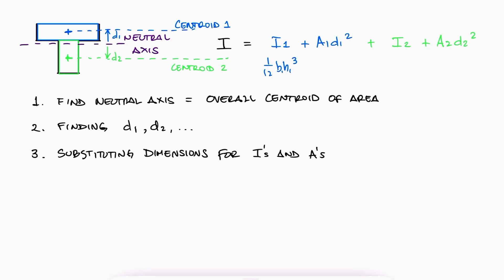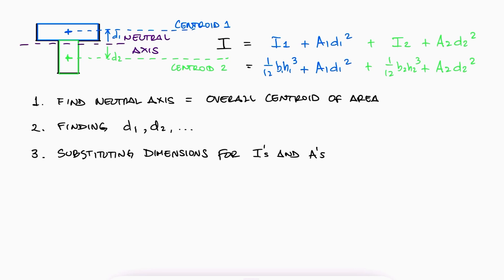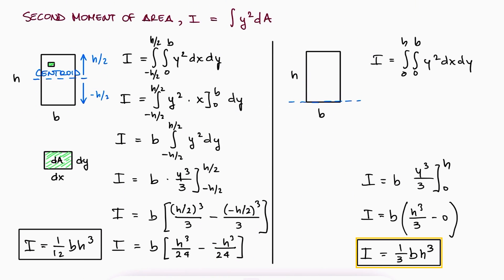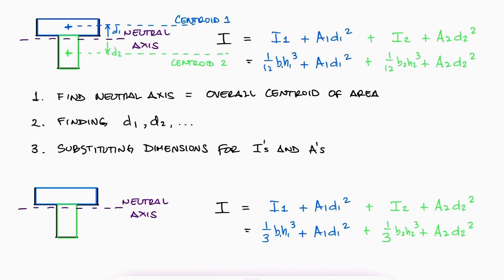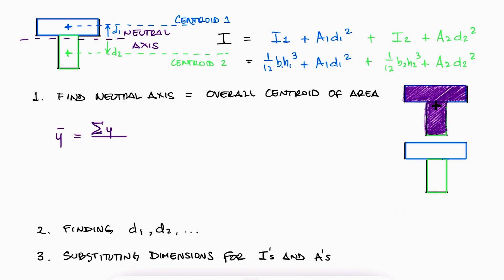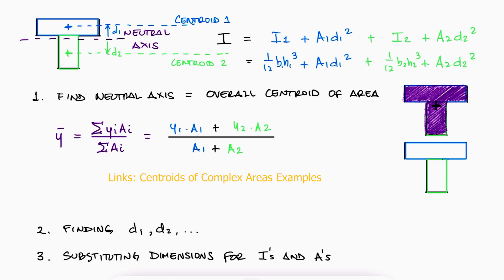Going back to what was stated earlier: if we're using 1/12 bh cubed, it's because we are using the centroid of the rectangle to calculate the second moment of area. So it makes sense that d in the parallel axis theorem equation is the distance from the neutral axis to the centroids. But if we use 1/3 bh cubed instead, we are using the base as the reference to get that second moment of area, and therefore d would be the distance from the neutral axis to the base of the rectangle. The general recommendation is to always find d between the neutral axis and the centroid, and just use the I expression about the centroid of that shape. The neutral axis is just the overall centroid of the cross-section area, and that centroid can be obtained by using the discrete sums of the centroid times the area of each shape over the total area. For examples on how to do this, please check the links in the description for Centroids of Complex Areas.